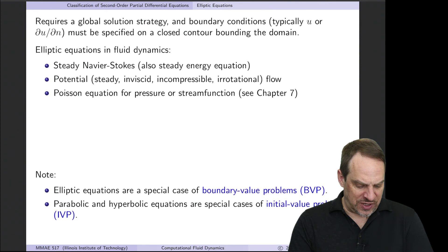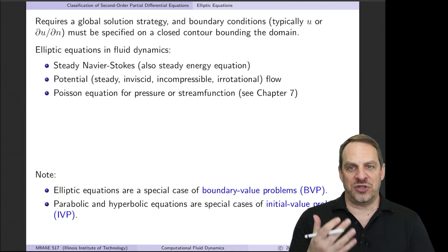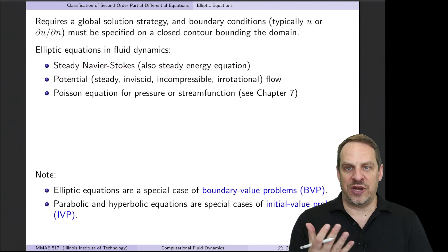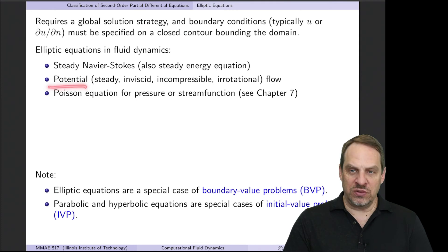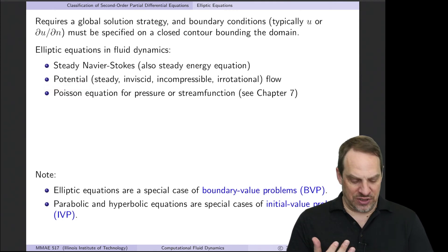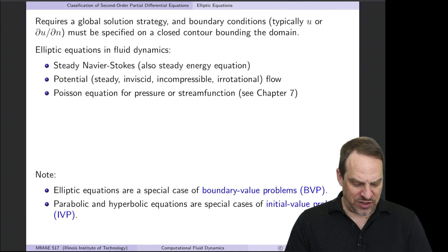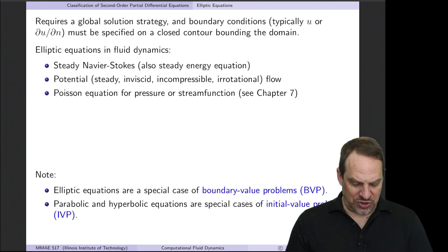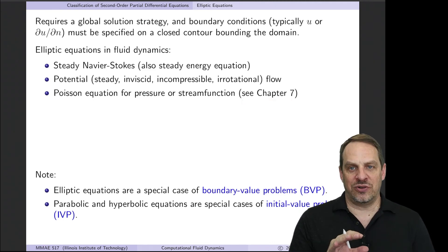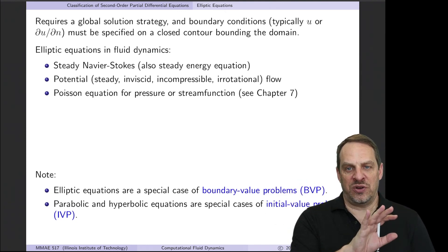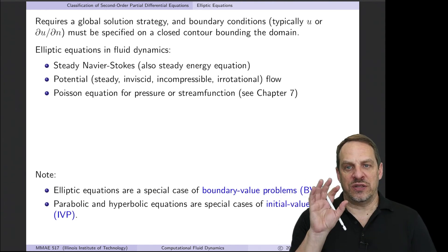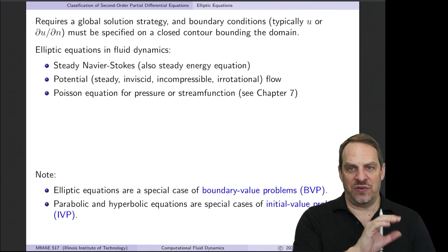In fluid mechanics, examples of elliptic equations include the steady Navier-Stokes equations and the steady energy equation—recall that unsteady Navier-Stokes was parabolic. Potential flow is governed by Laplace's equation, and Poisson equations govern pressure and stream function in fully viscous cases. So PDEs can be characterized as hyperbolic, parabolic, or elliptic—with parabolic and hyperbolic being initial value problems and elliptic equations being boundary value problems.